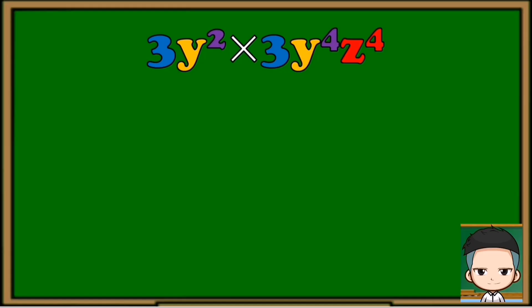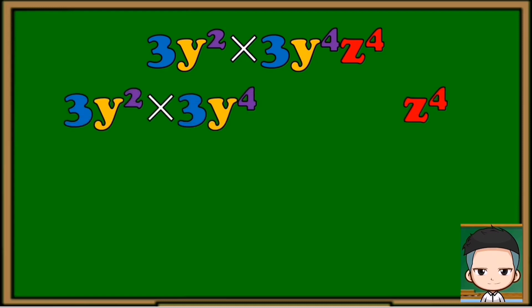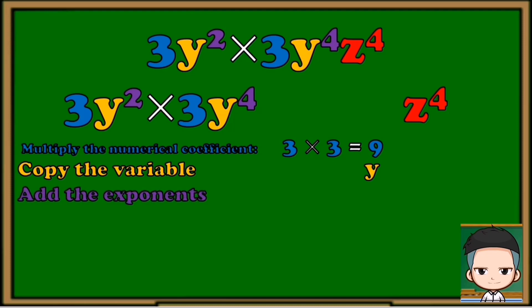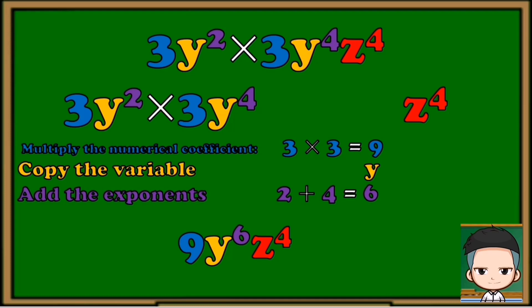Now let's try to multiply a one-variable term by a two-variable polynomial. In this example, you only need to multiply those with the same variable, including the numerical coefficient. We need to set aside z raised to 4 since it has a different variable. Just repeat the process of multiplication of polynomials with the same variable, then include z raised to 4. Make sure the variables are in alphabetical order. Our final answer is 9y raised to 6, z raised to 4.